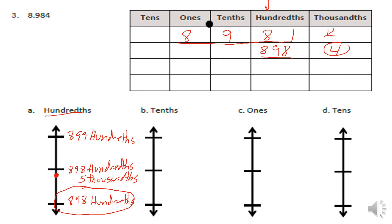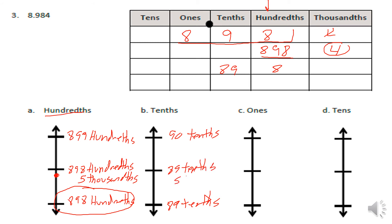Coming to the tenths position, we have eighty-nine tenths and eight hundredths. The bottom of our vertical line is eighty-nine tenths, the top is ninety tenths, and the center is eighty-nine tenths and five hundredths. Since eighty-nine and eight hundredths falls above the center, we round to ninety tenths.